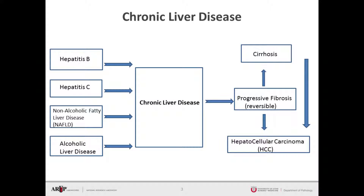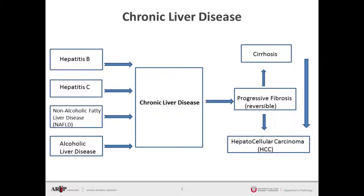Chronic liver disease is a major healthcare burden in the United States — a cause of mortality and morbidity at high levels. It is due to a number of different etiologies, including alcohol abuse, non-alcoholic fatty liver disease, which is on the rise due to the epidemic of metabolic syndrome and obesity, and is expected to surpass hepatitis C as a cause of chronic liver disease in the coming decades. There is also viral hepatitis C and viral hepatitis B, with hepatitis C being a major cause in the United States.